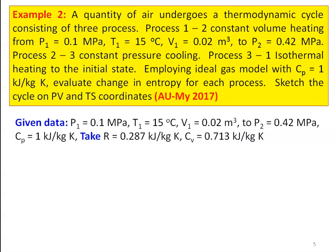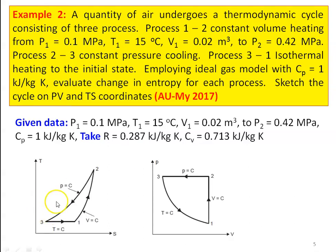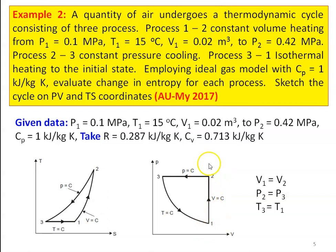Given data: P1 = 0.1 MPa, T1 = 15°C, V1 = 0.02 m³, P2 = 0.42 MPa, CP = 1 kJ/kg·K. We take R = 0.287 kJ/kg·K, so Cv = CP − R = 0.713 kJ/kg·K. For the PV and TS diagram: process 1–2 is constant volume heating, 2–3 is constant pressure cooling, and 3–1 is constant temperature heating. Conditions: V1 = V2, P2 = P3, T3 = T1.